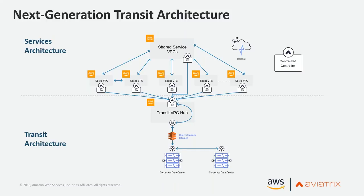For visibility, we constantly display real-time latency between hops — spoke to transit, and transit to on-prem. We provide throughput visibility showing what's going in and out of each gateway. You can monitor tunnel status, and that monitoring can trigger email alerts or integrate with OpsGenie or PagerDuty for further processing, handling off-hours paging and alerting.